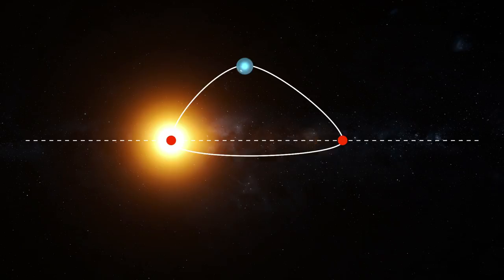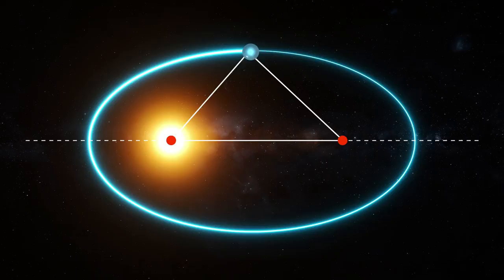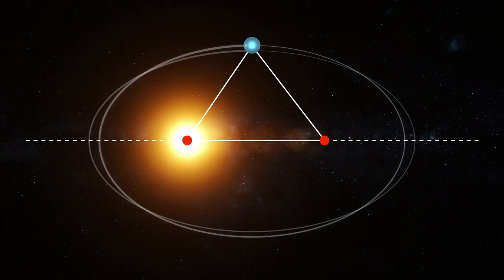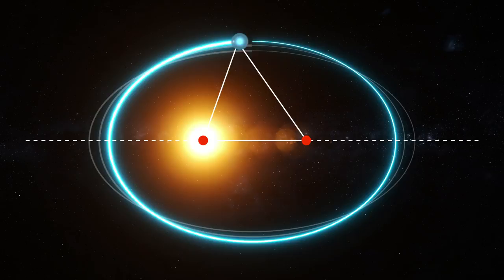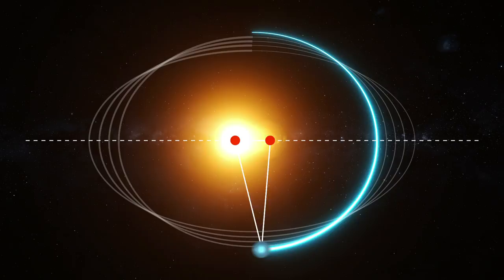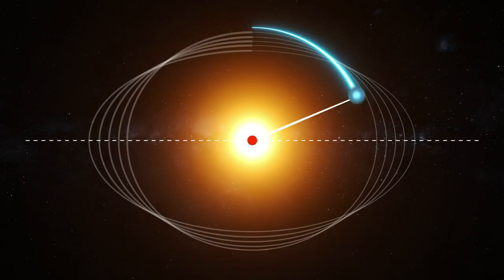They help determine the ellipse's shape. With the foci placed on a straight line, we now add a string and a marker attached. Now we can draw out the ellipse. Let's do this again, but with the foci closer together. As you can see, the location of the foci will affect the shape of the ellipse. Using the same size string and adjusting the distance between the foci, we change the shape of the ellipse. As we move the foci closer and closer together, the ellipse will start to look more and more like a circle. And when the foci are on top of each other, the ellipse becomes a perfect circle.